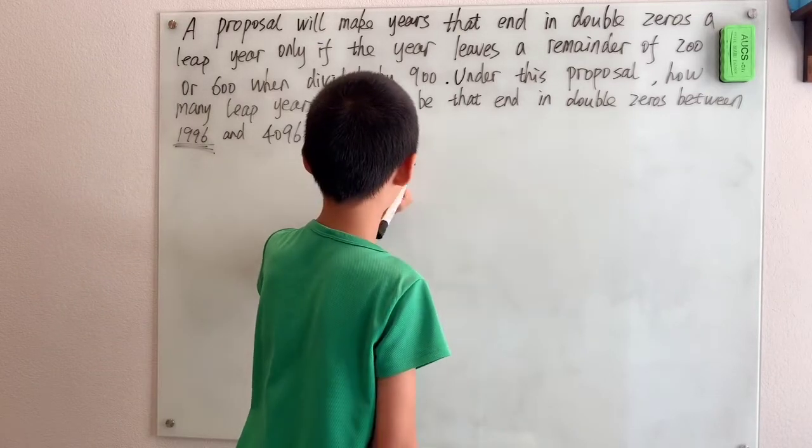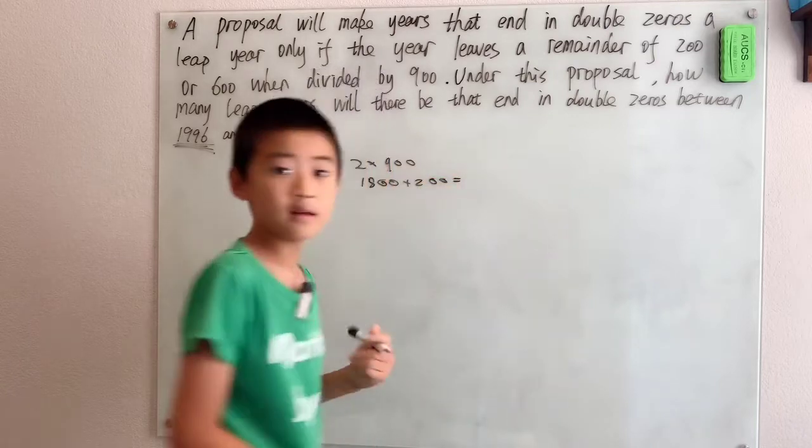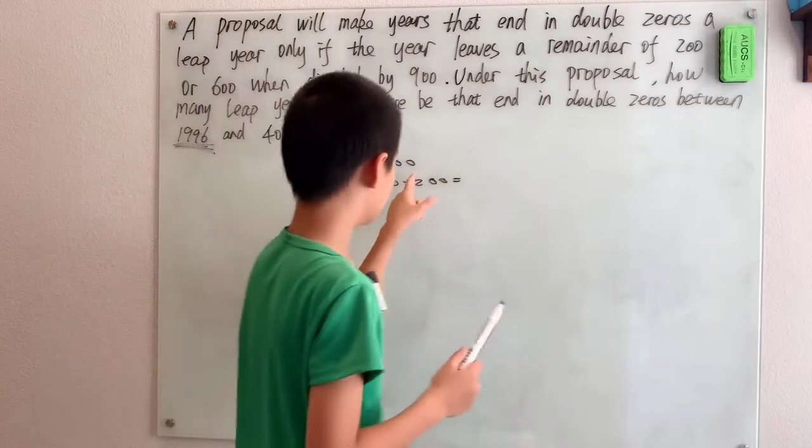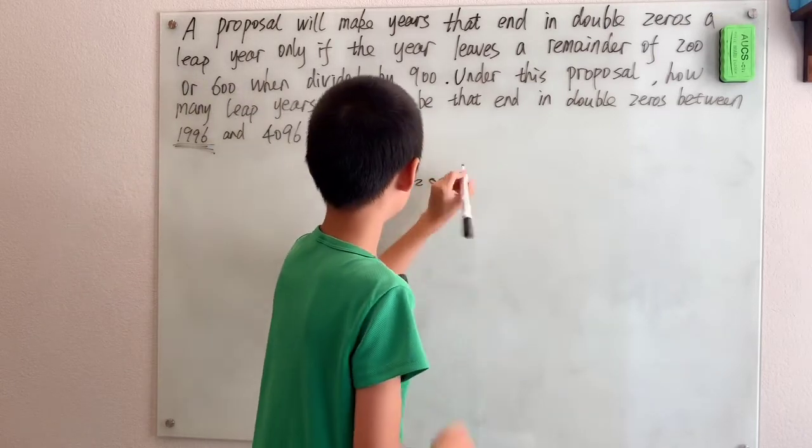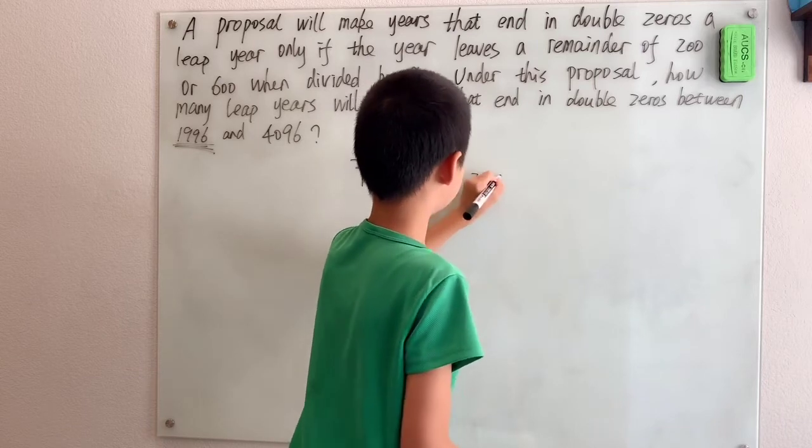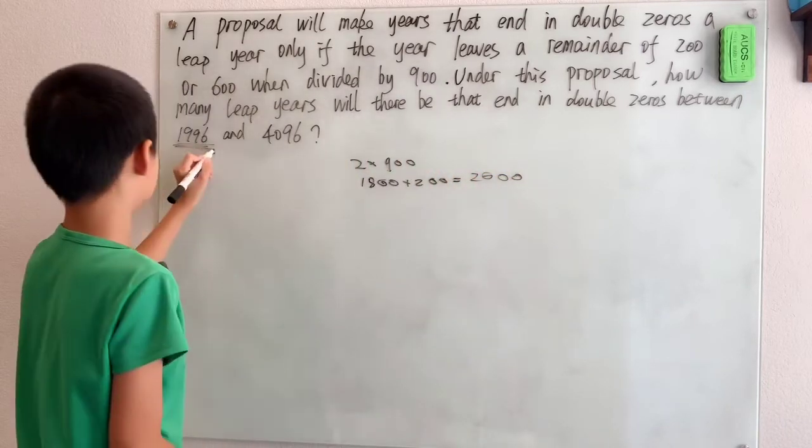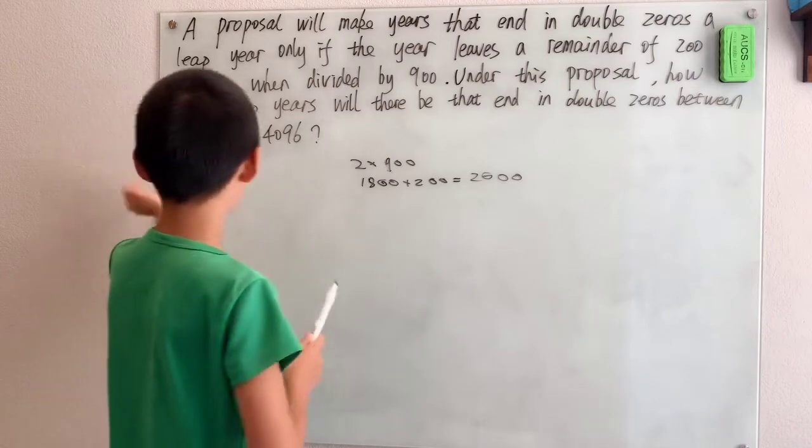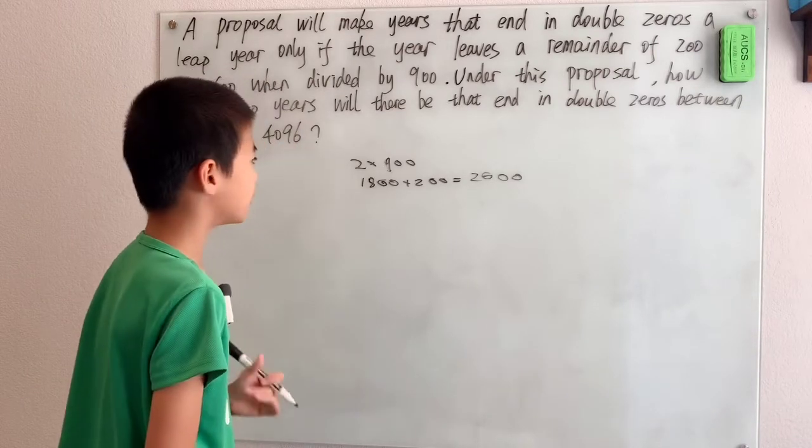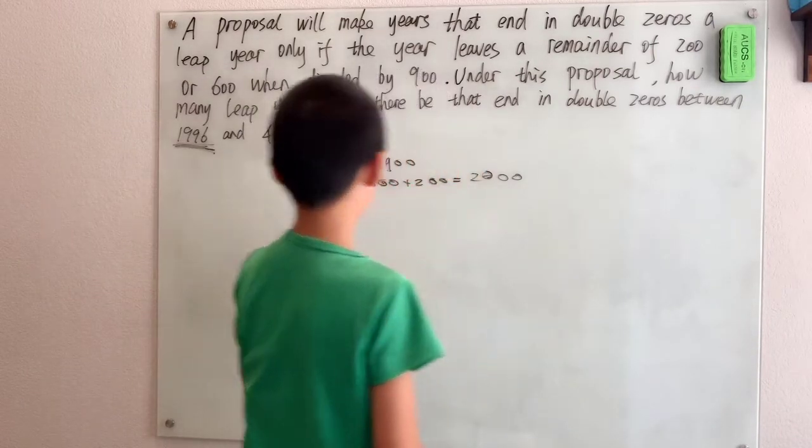If we add on 200, that will give us a number that has a remainder of 200. We get 2000, which is in this range of 1996 to 4096.